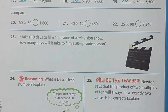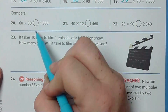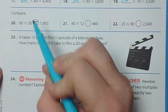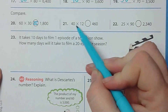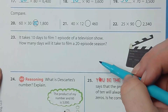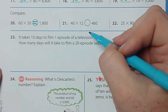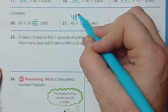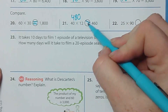We're going to compare: 60 times 30 is 1800, and 1800 equals 1800. What is 4 times 12? Four times 12 is 48, add one zero — 480 is greater than 460.